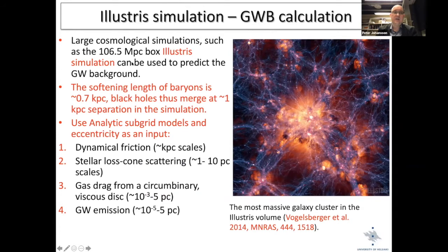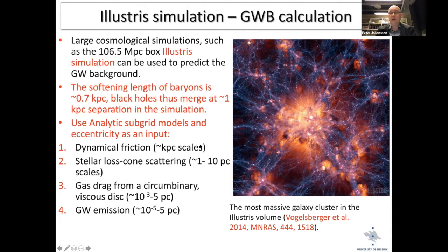Black holes in Illustris typically merge when separated by about one kiloparsec, so there is no dynamical information below that separation. Work by Kelley et al. applied subgrid modeling to follow dynamics below the softening limit: analytical models for dynamical friction, stellar loss-cone scattering, gas drag from a circumbinary viscous disc, and gravitational wave emission. None of this is directly resolved — it is entirely subgrid modeling.